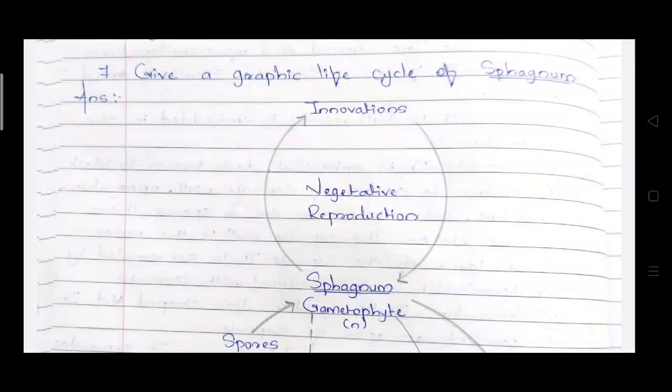Hello students, today we discuss about the life cycle of Sphagnum. In a previous video we already discussed reproductions in Sphagnum. There are three types of reproduction that take place: vegetative, sexual, and asexual.